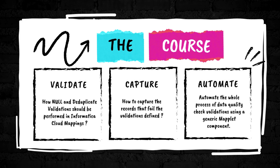What is covered as part of this course? The course starts with ultimate basics, such as how null validations should be performed in Informatica Cloud Mappings, how deduplicate validations should be performed, and how to capture the records that failed the validations defined. Finally, we cover the main part of the course where we automate the whole process of data quality check validations using a generic maplet component.